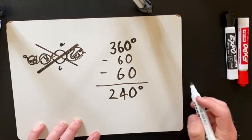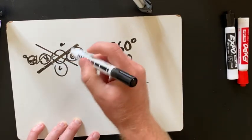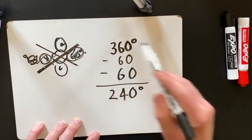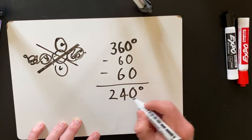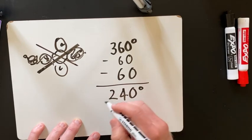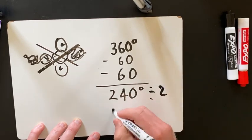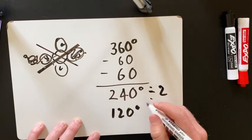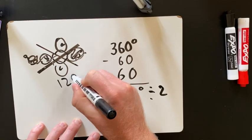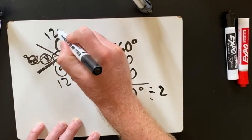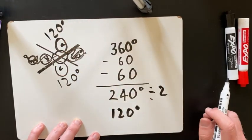So that would then mean that this angle C and angle A together make 240. So if I've got two angles left and I divide this by two, I should get angle C is 120 and angle A is also 120.